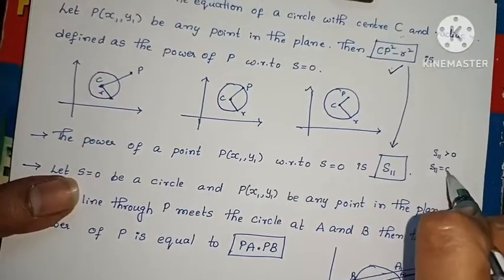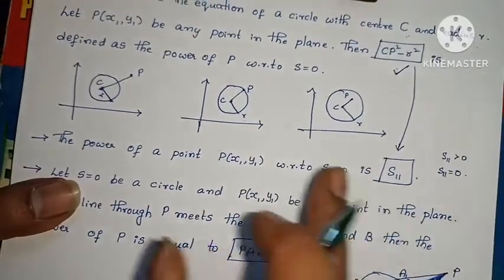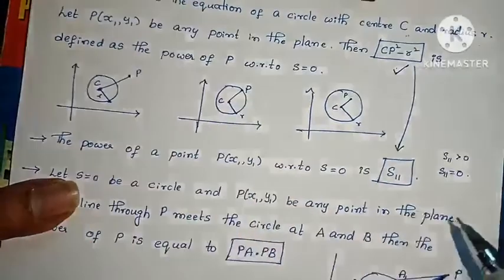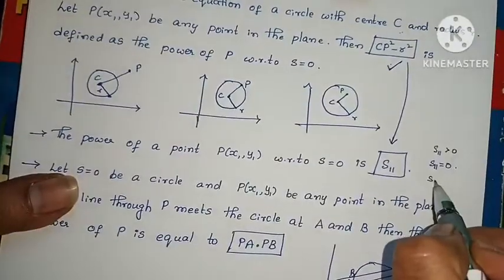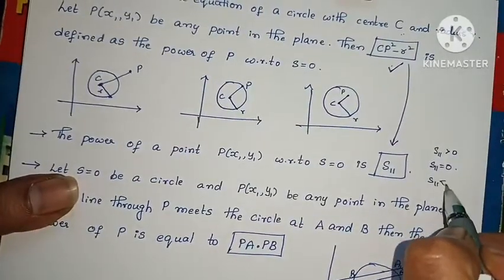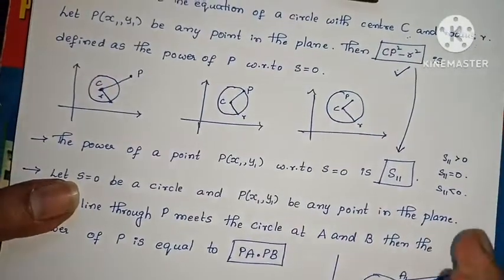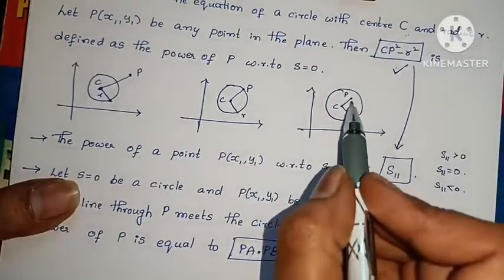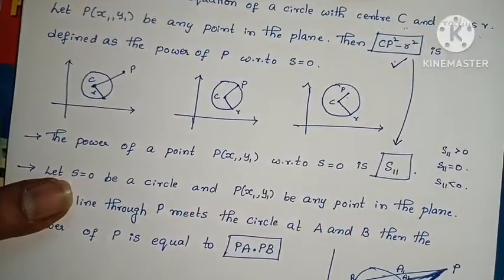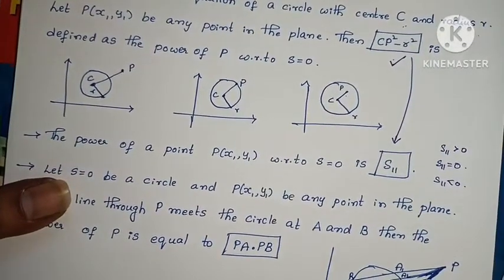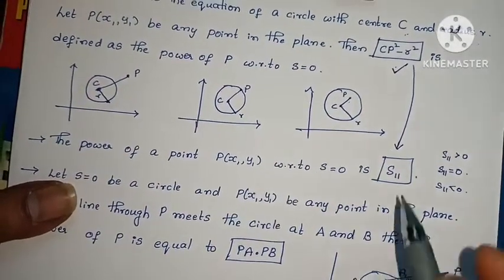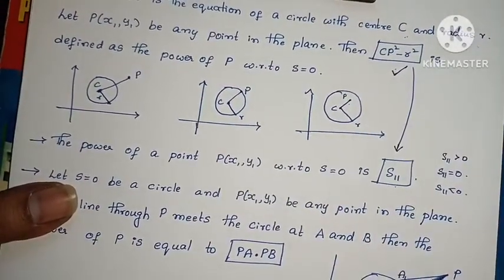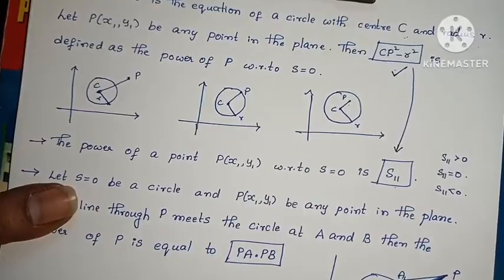If S11 equals 0, the point P lies on the circle. If S11 is less than 0, the point P lies inside the circle. So power of point P direct formula is S11.